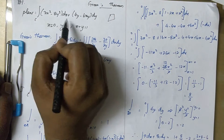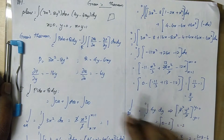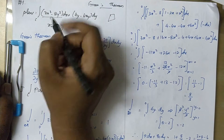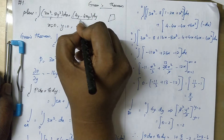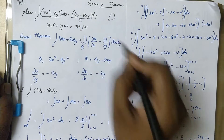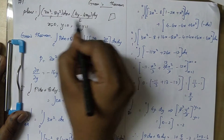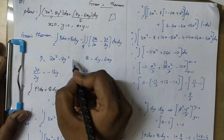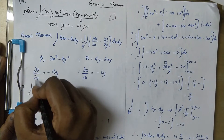So in the equation, P dx is equal to — this value we consider P, and this value we consider Q. So we have our P value and Q value, and we will partially differentiate them.